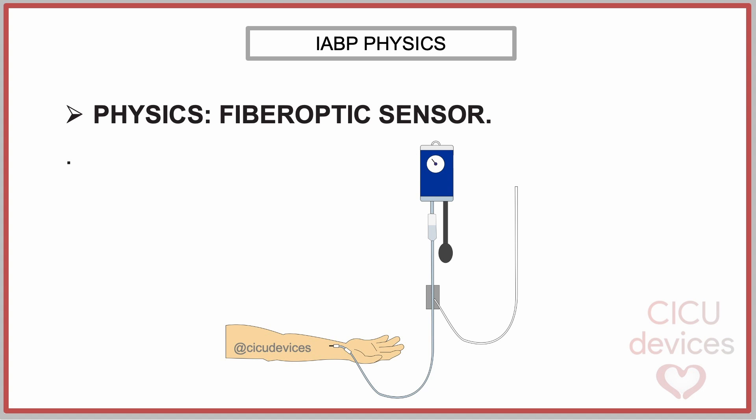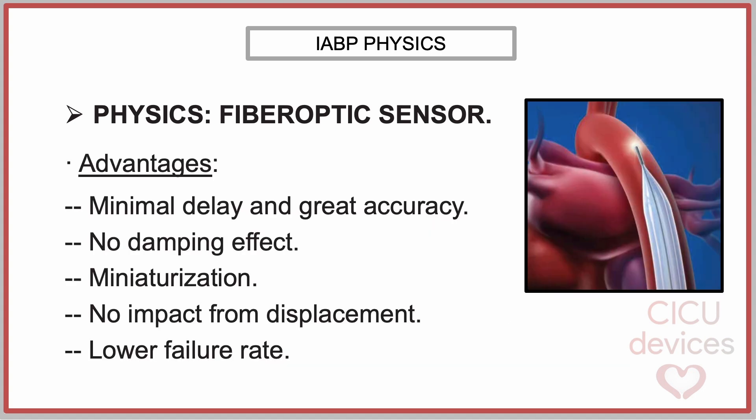The fiber-optic sensor: In the early models of IABP catheter, aortic pressure was measured using a fluid-filled catheter method. However, more modern models incorporate a fiber-optic pressure sensor system, which offers several advantages.